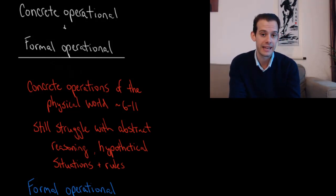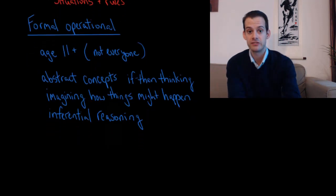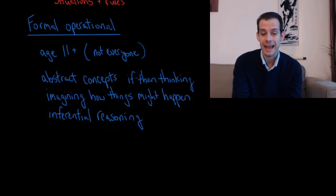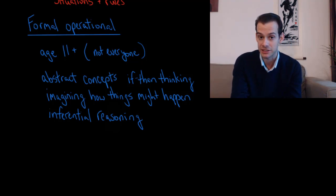They're able to think in a different way that doesn't follow the usual rules of the world, and that means they're now entering the formal operational stage. This is the final stage in Piaget's theory and this starts sometime around age 11 and continues for the rest of life. Although Piaget thought that not everybody reaches this formal operational stage.